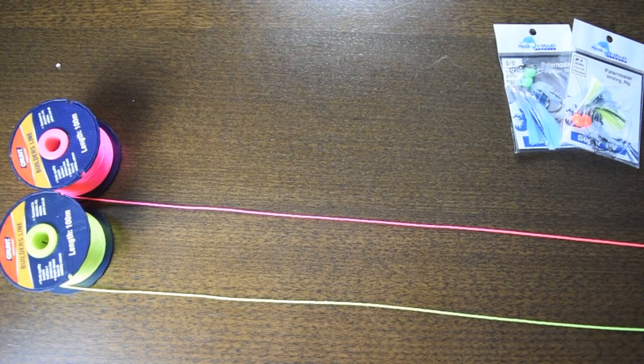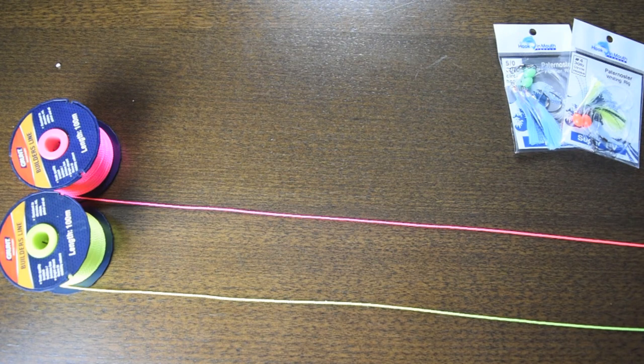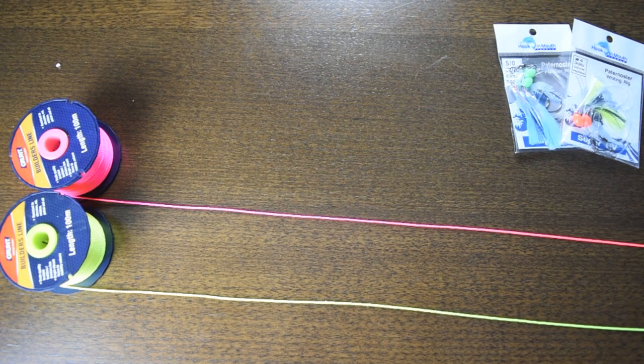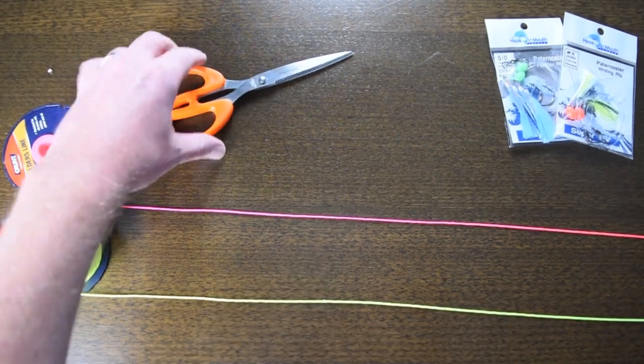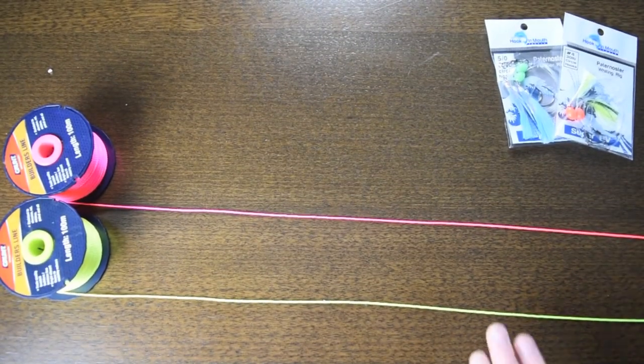Alright, let's get started. For today's demonstration we're using builder's line so that you can clearly see it when we're actually tying the knots. Basically you line them up as you can see here and you choose whichever line you'd like to use first.